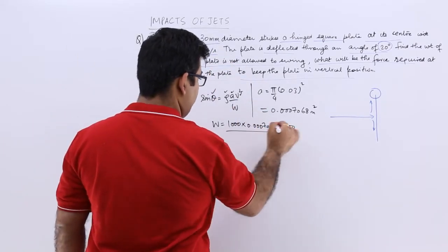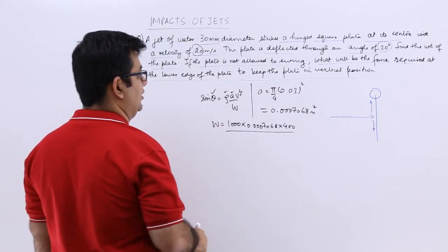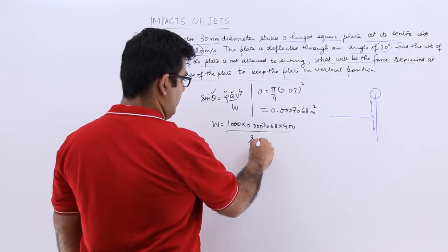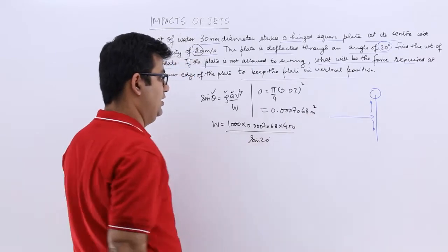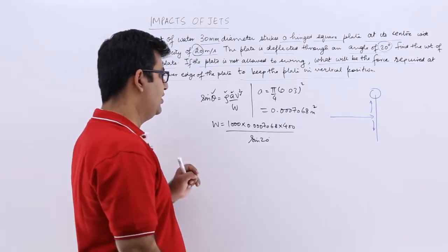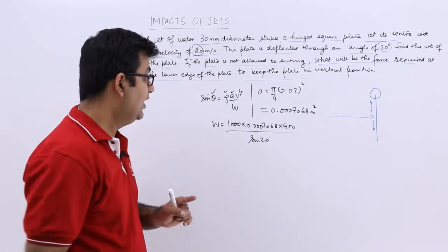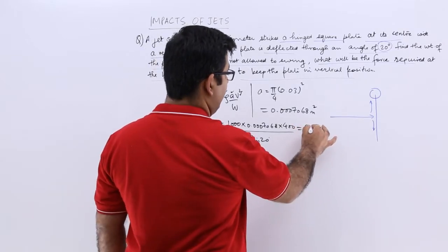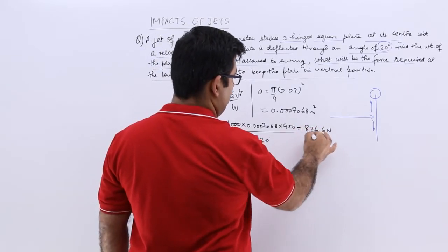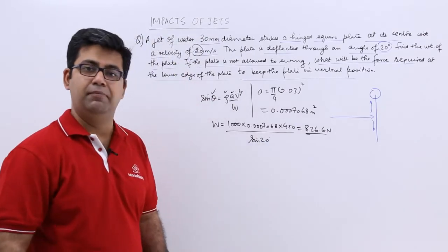Divided by sin theta, so sin of 20 degrees. Do the scientific calculator calculation and the value of the weight will come out to be 826.6 Newtons. So this is the total weight of the plate.